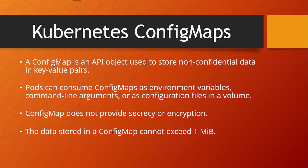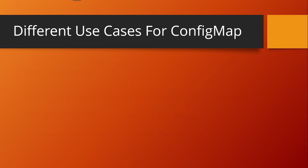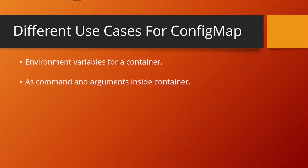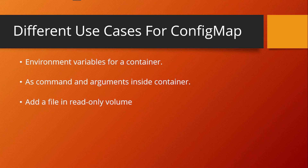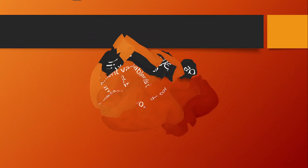Now let's look at the different use cases for ConfigMap. ConfigMaps can be used as environment variables for a container, as command or arguments inside a container, and as a file in read-only volumes. These are the main scenarios and use cases for ConfigMaps.